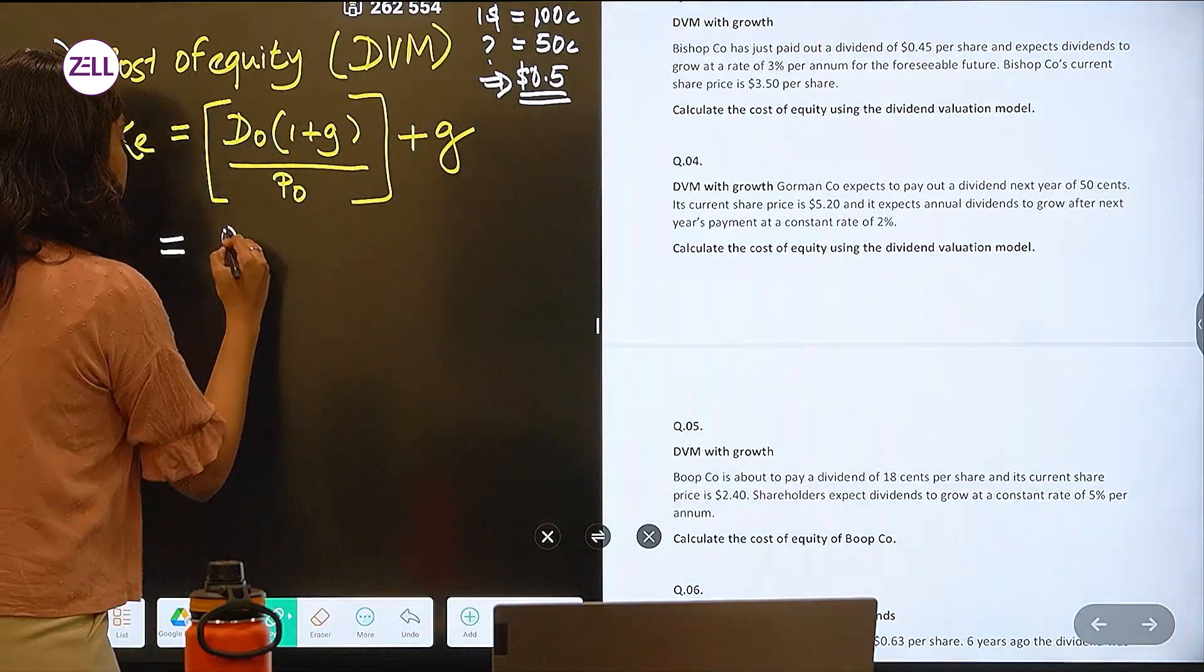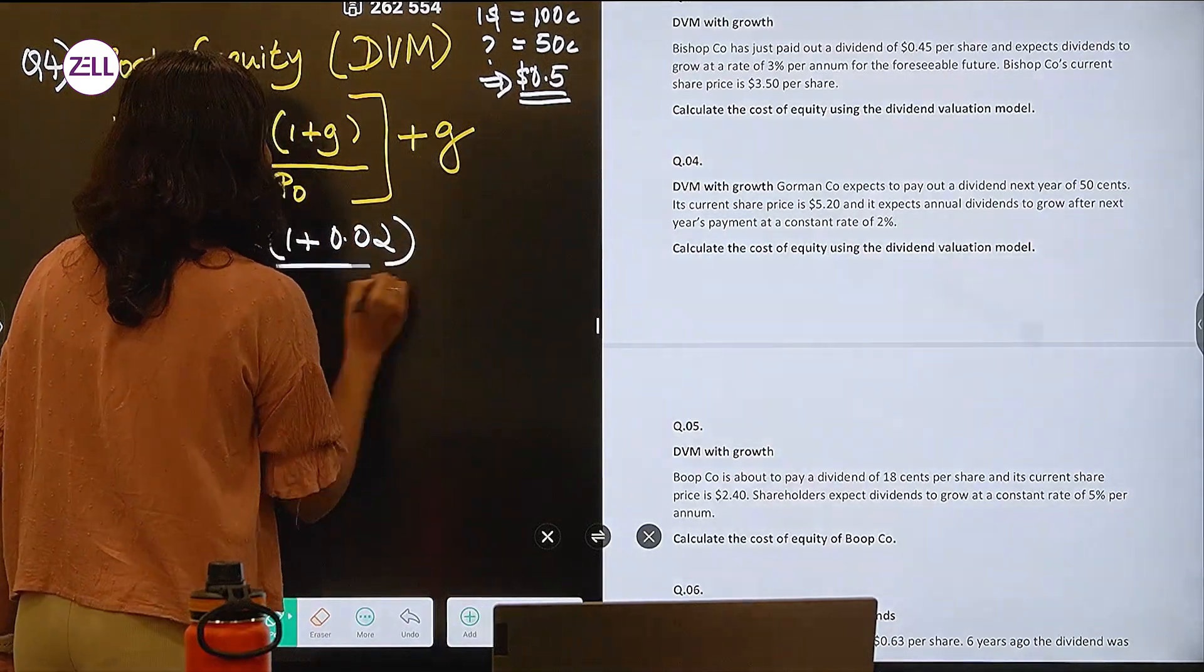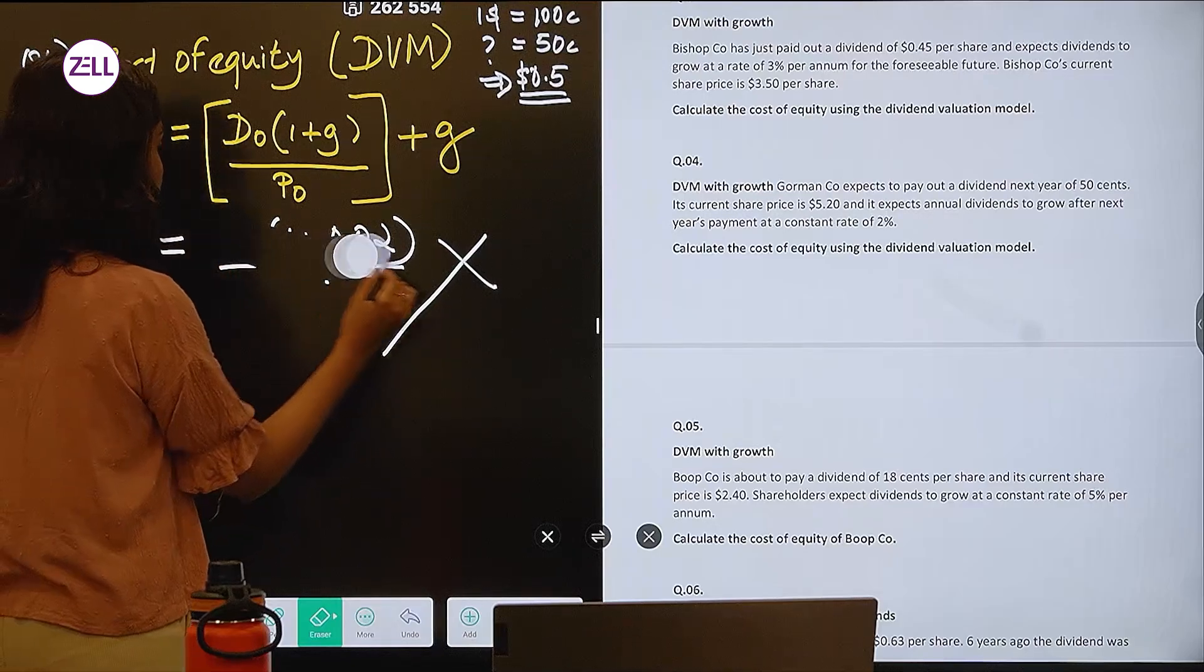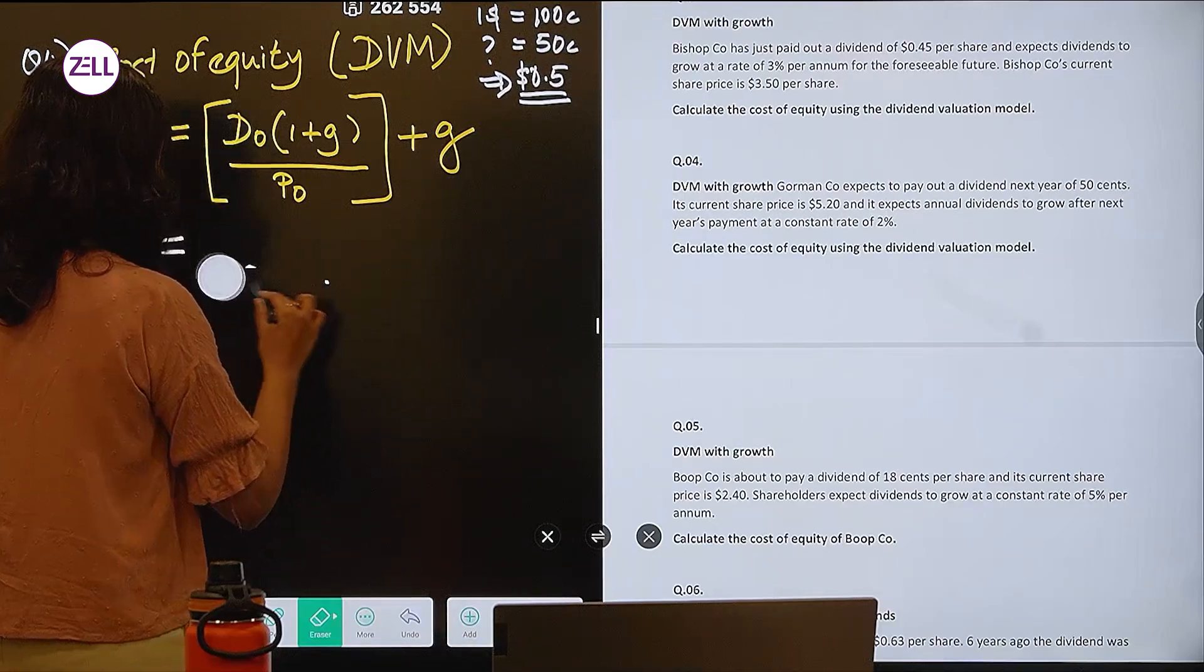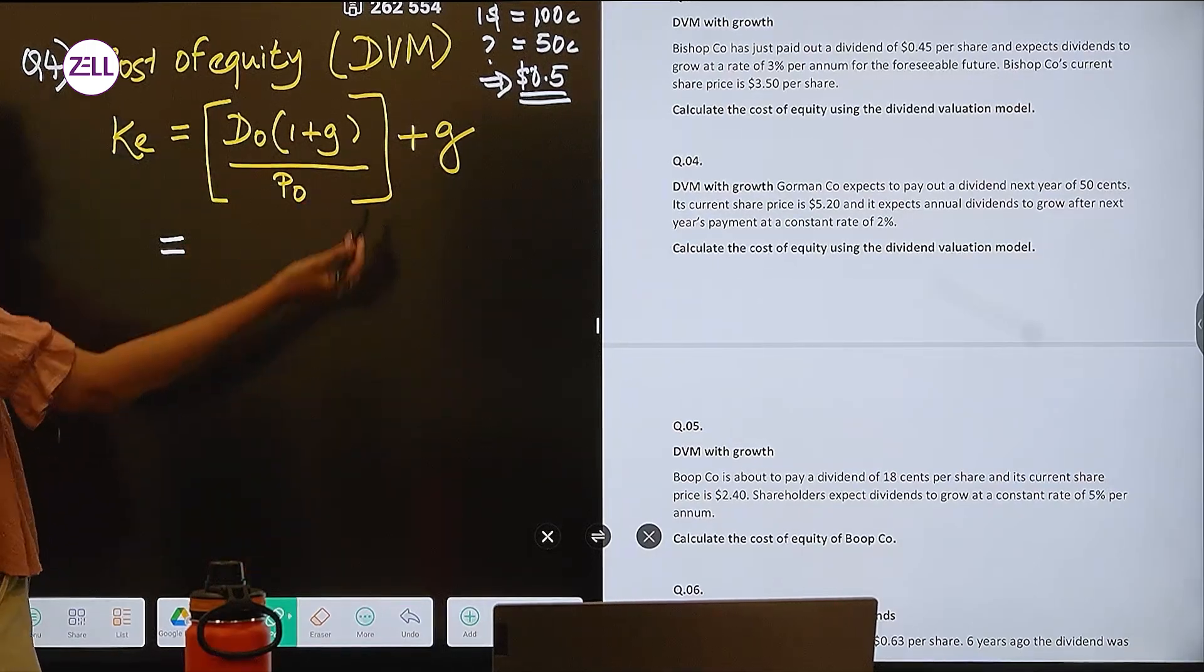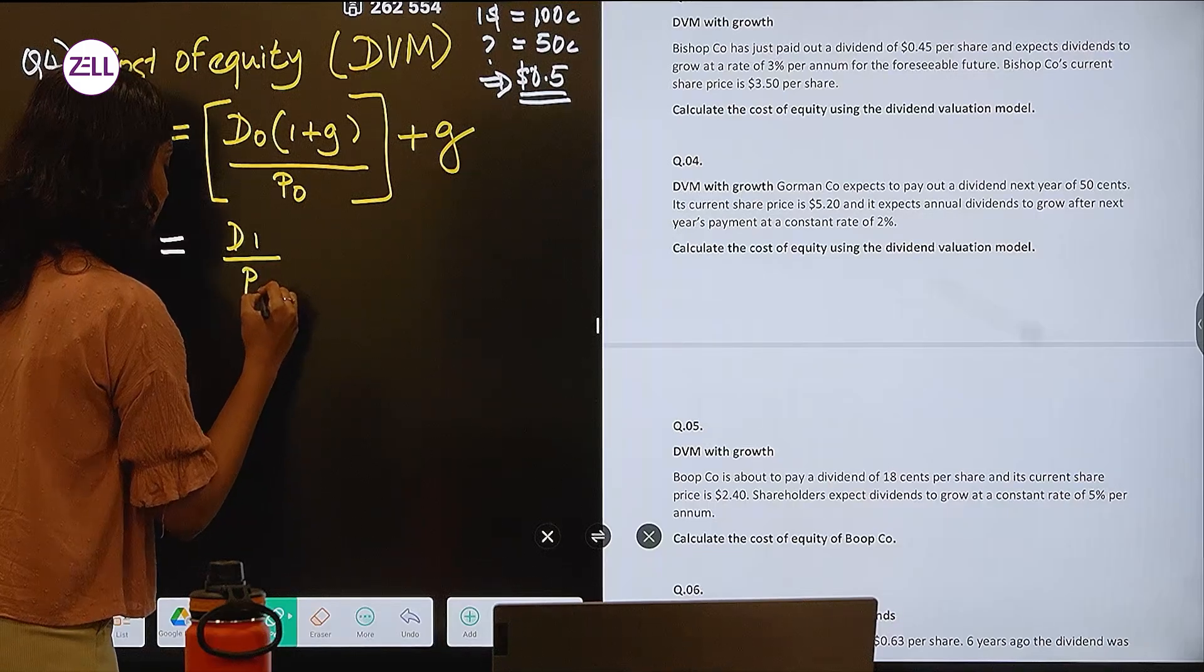You know what they will do? They will take 0.5 then again add 1 plus the growth rate and do the math and get the wrong answer. No. You are not supposed to do it that way. Because what is given in the question is already next year's dividend.